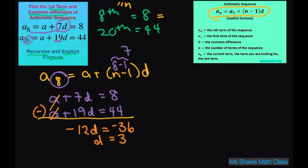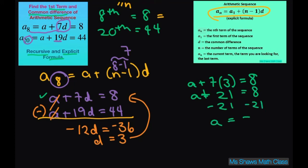Now if d equals 3, then all you have to do is plug that back in to one of the equations. I'll just use the first one. We have a plus 7 times 3 equals 8. So a plus 21 equals 8. Subtract the 21, so a equals negative 13.